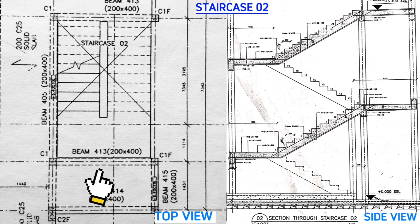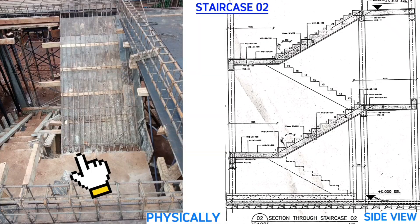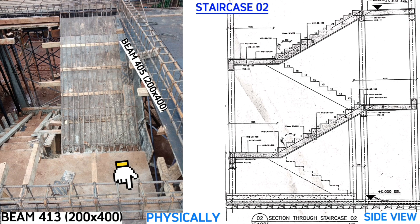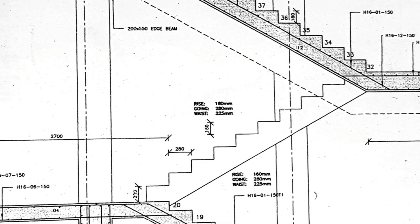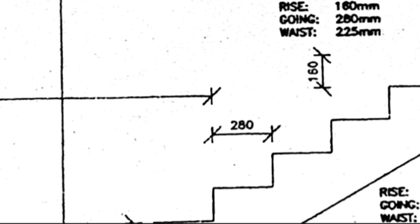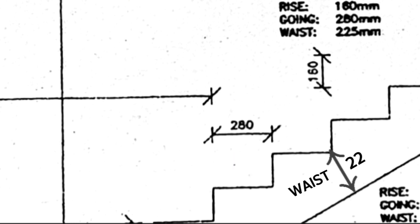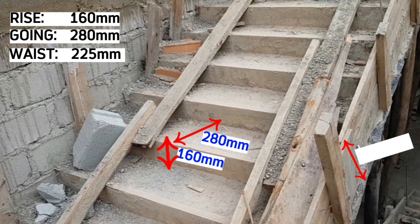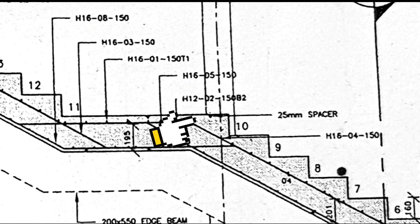This is beam 413. Similarly, on ground, this is staircase 02 and this is beam 405 here. This is beam 413. The drawing also details that the rise is 160 millimeters, the going as 280 millimeters and the waist as 225 millimeters. Physically, on ground, this is 160 millimeters for the rise, this is 280 millimeters for the going and the waist is 225 millimeters.